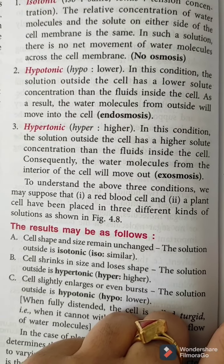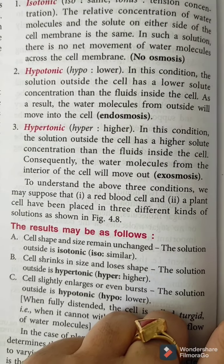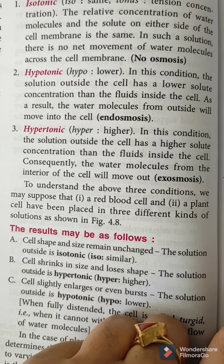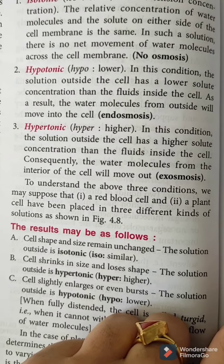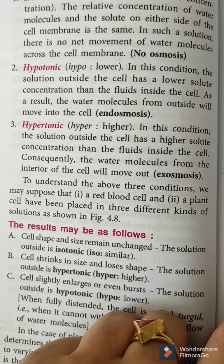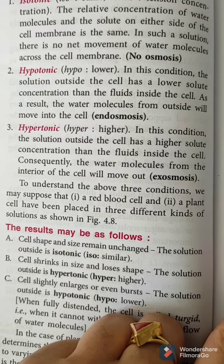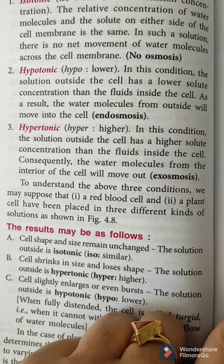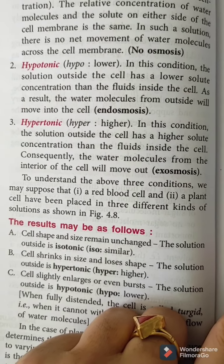Third, hypertonic solution. 'Hyper' means more or higher. The solution's concentration is more than the cell sap — it is thicker than the cell sap. In this condition, the cell sap has more water molecules than the solution, so water molecules move from the cell to the outside. This is called exosmosis.